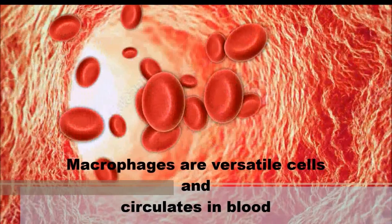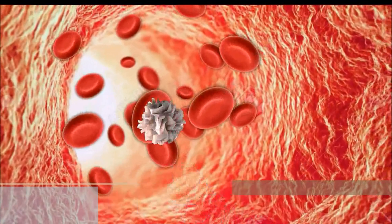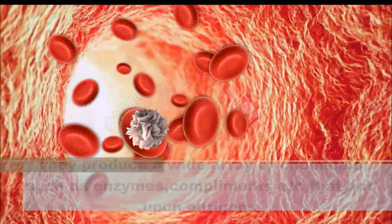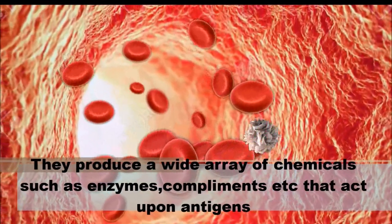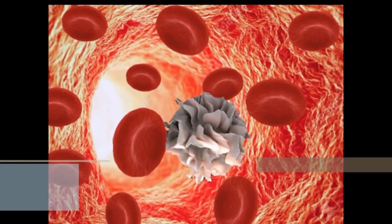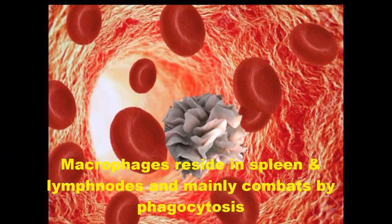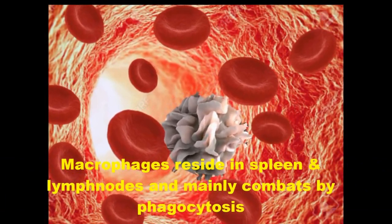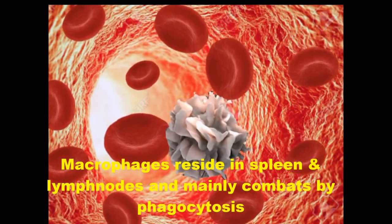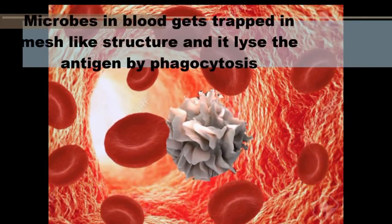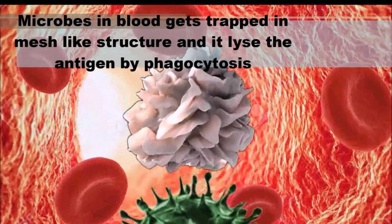Macrophages are motile cells that circulate in the blood. They are also called white blood cells. They produce a wide array of chemicals such as enzymes, complements, etc., that act upon antigens. A macrophage resides in the spleen and lymph nodes and mainly combats by phagocytosis, a way of killing bacterial or viral cells. Microbes in blood get trapped in a mesh-like structure and the antigen is lysed by phagocytosis.